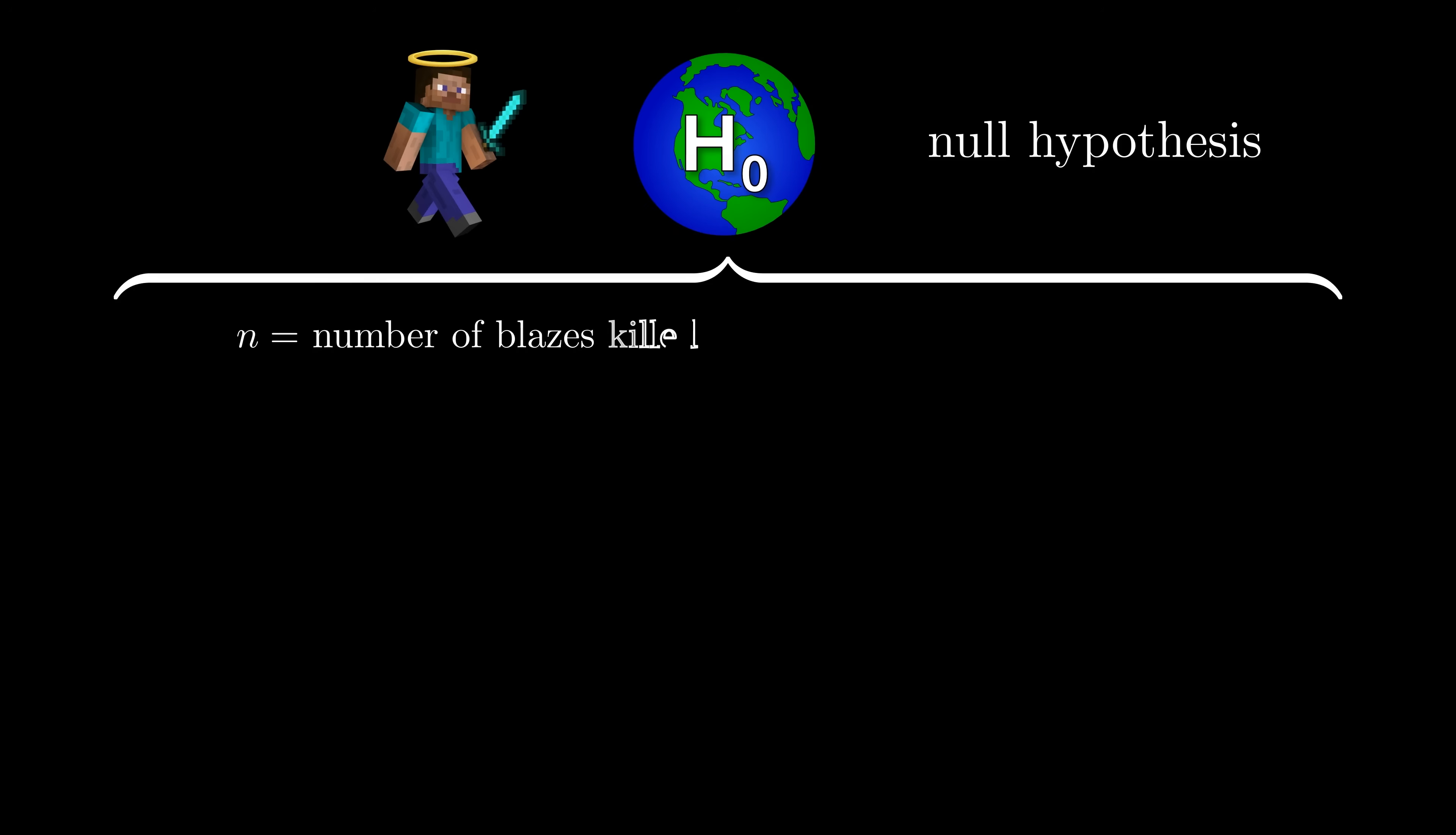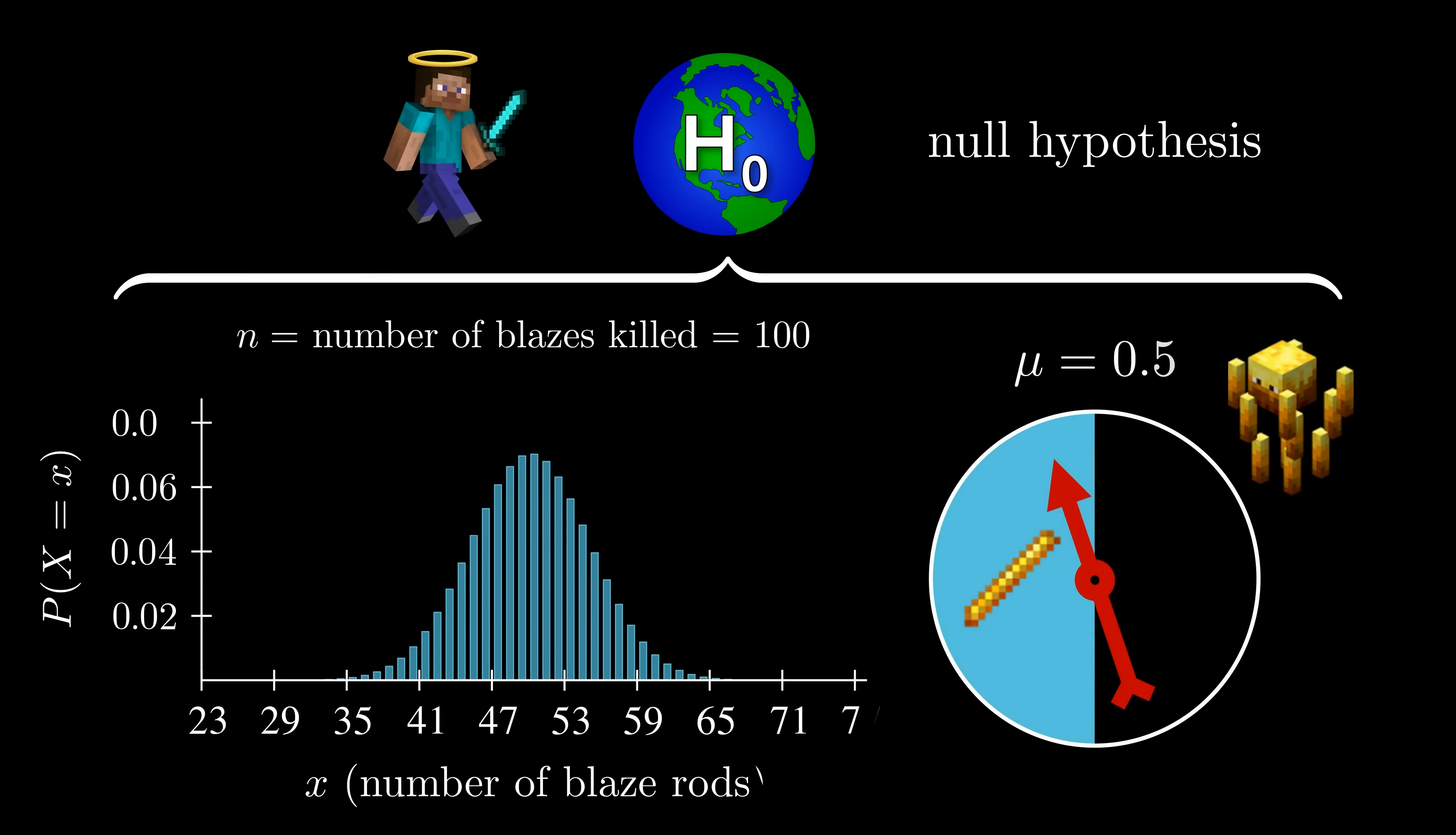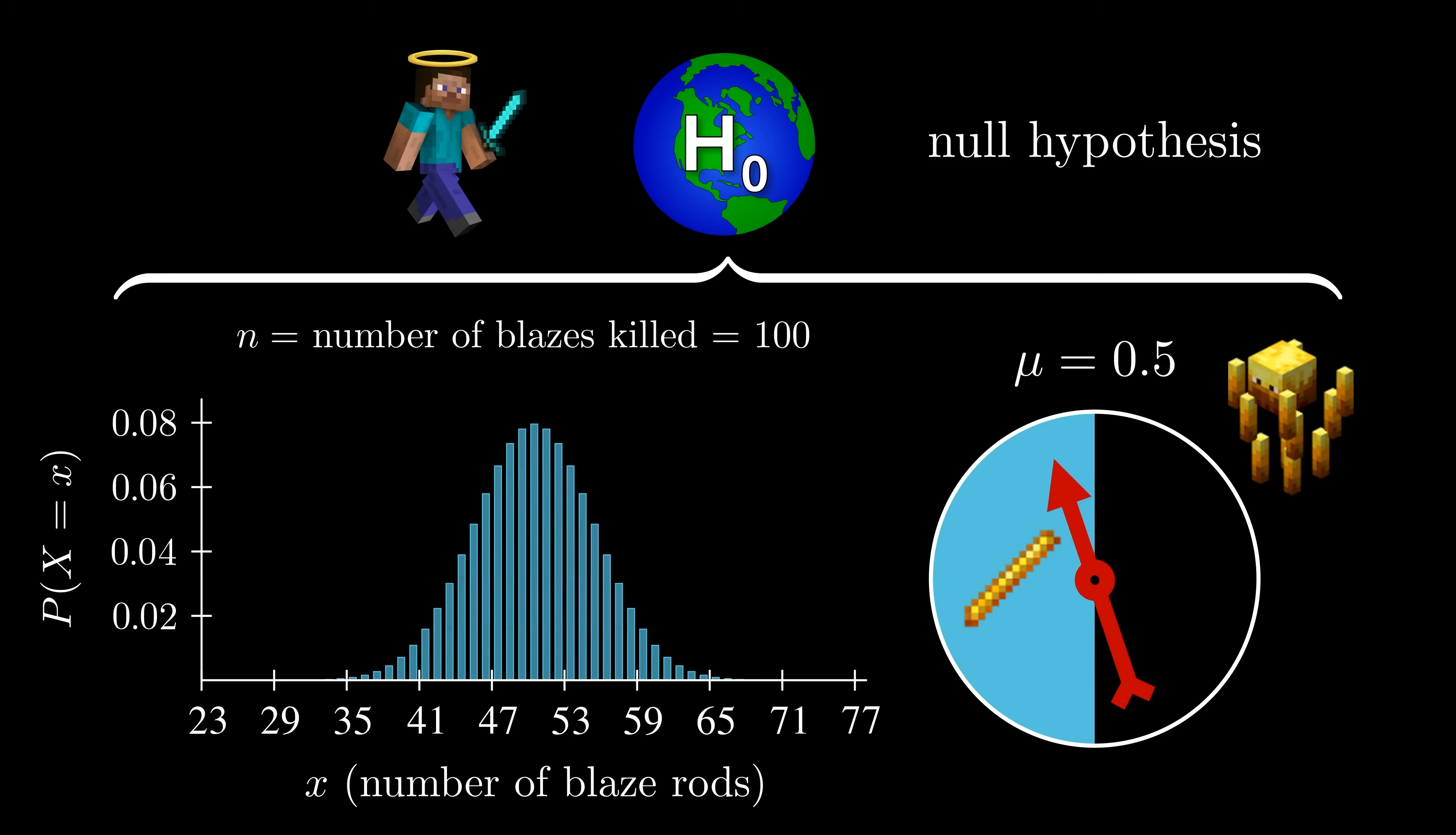In our example, we said that our friend killed 100 blazes. So if they didn't cheat, if we live in the null world, then the probability of them getting x rods is given by this binomial probability distribution, with n equal to 100 and mu equal to 0.5.